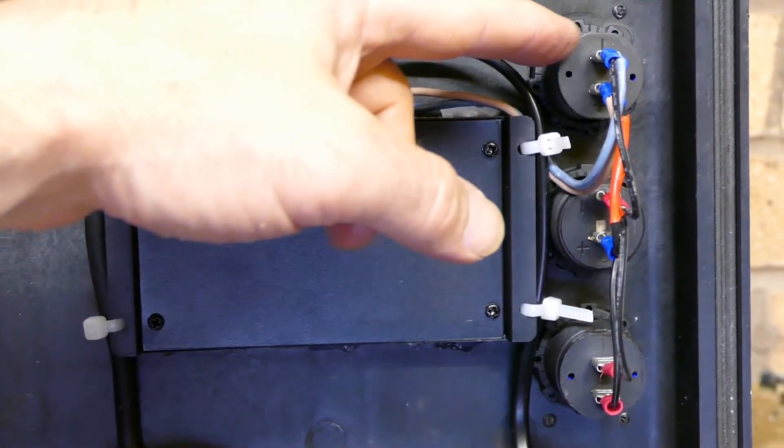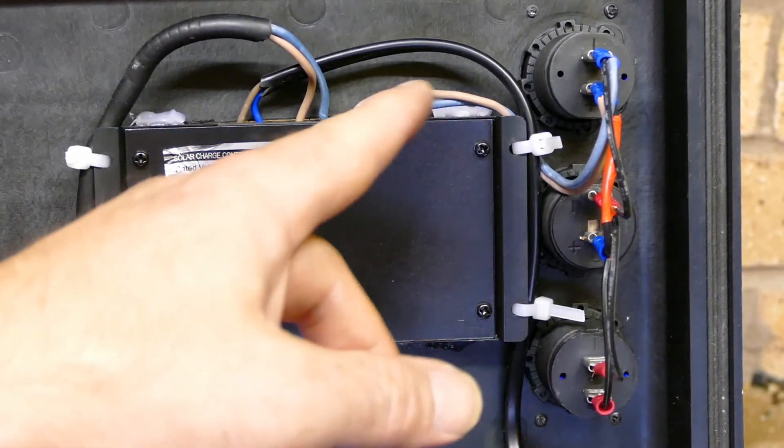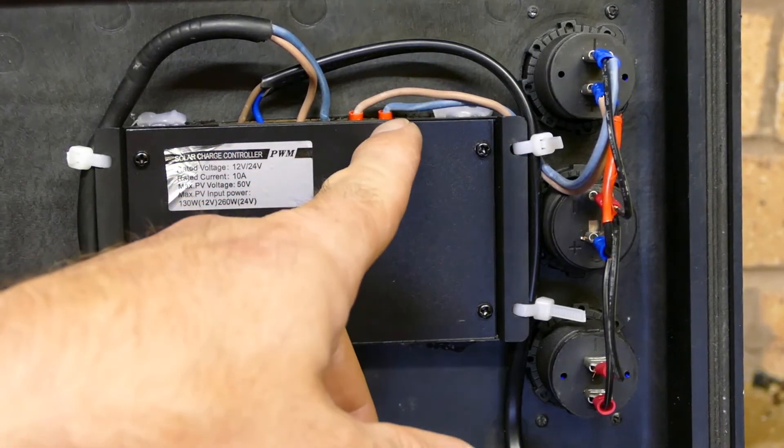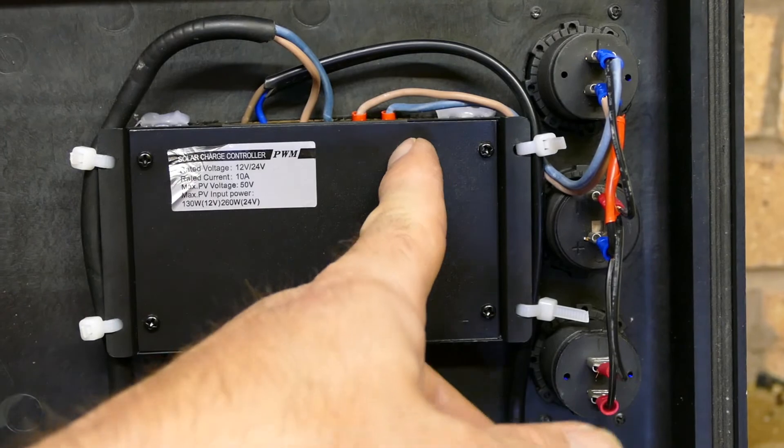Now, all those wires go up to this solar charge controller, from the USB ports, to the battery, to the solar input ports.